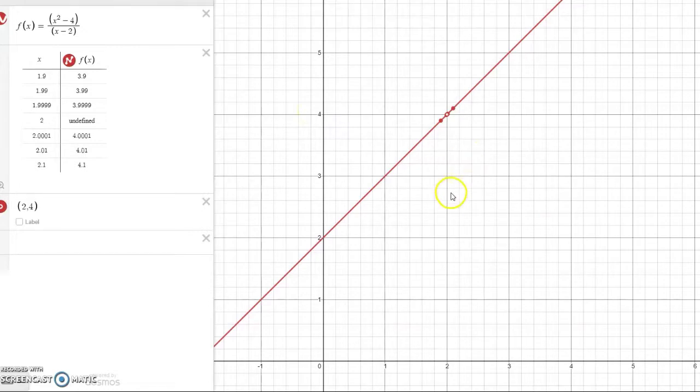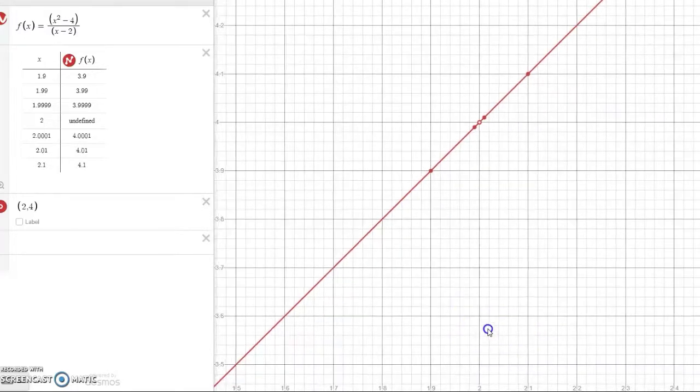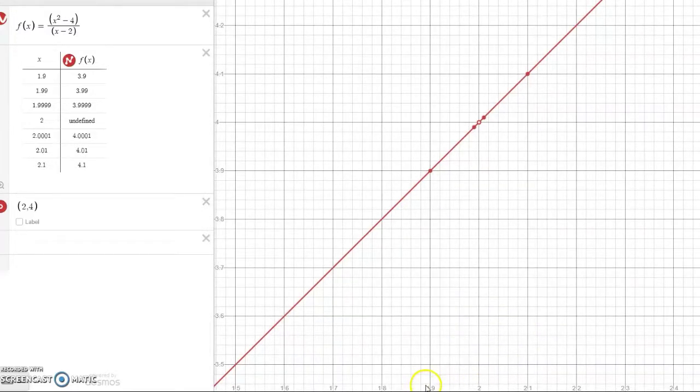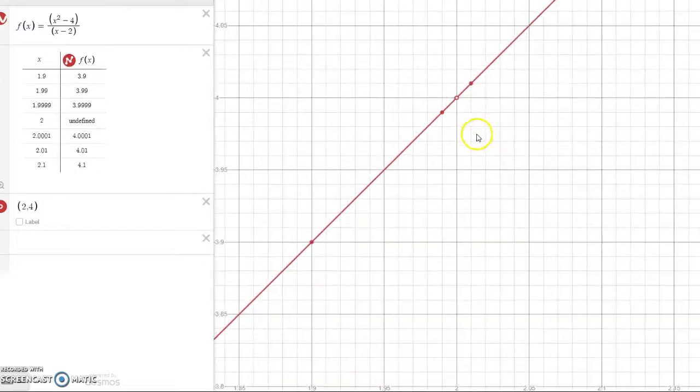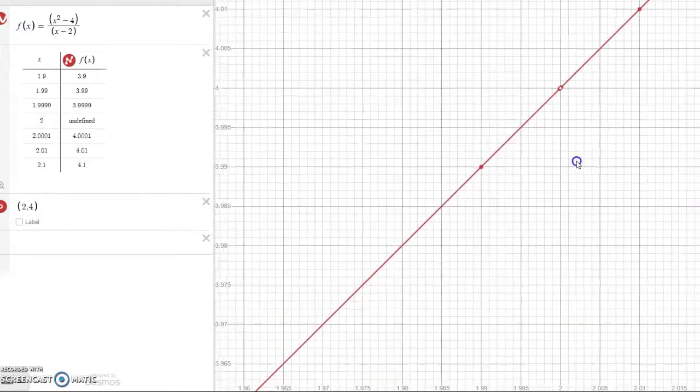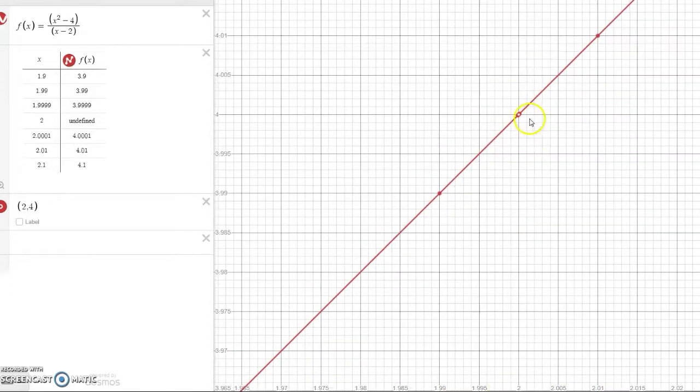But just to kind of confirm that, let's zoom in on that area and see if we can better understand what's happening. Notice now we see input values of 1.9 or 2.1. And as x is nearby to 2, as the input values are nearby to 2, again we see the output values here are nearby to 4. And we could zoom in as close to that as we want and still see that as x is nearby 1.995 and x is 2.005, we are still seeing output values that are nearby to 4.